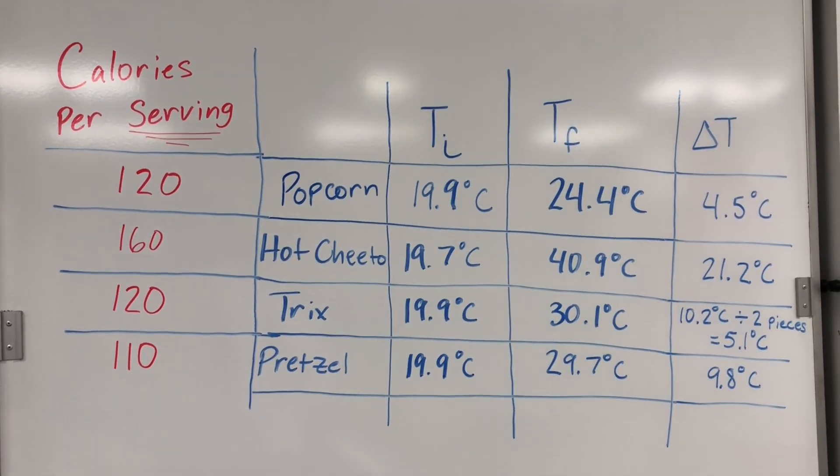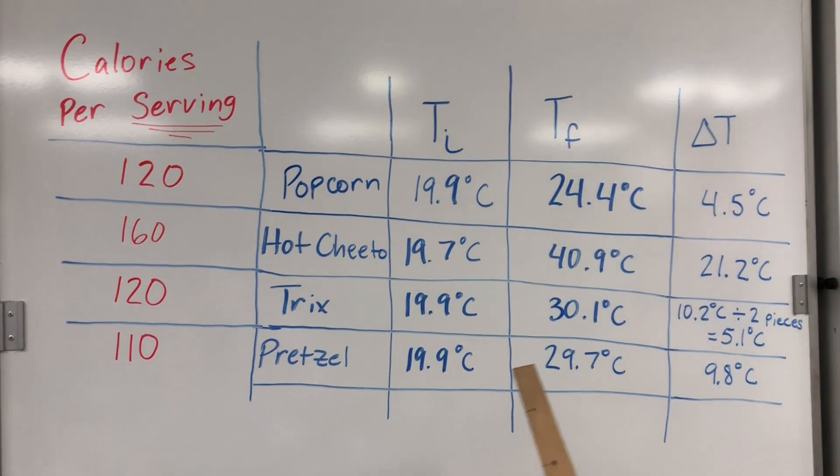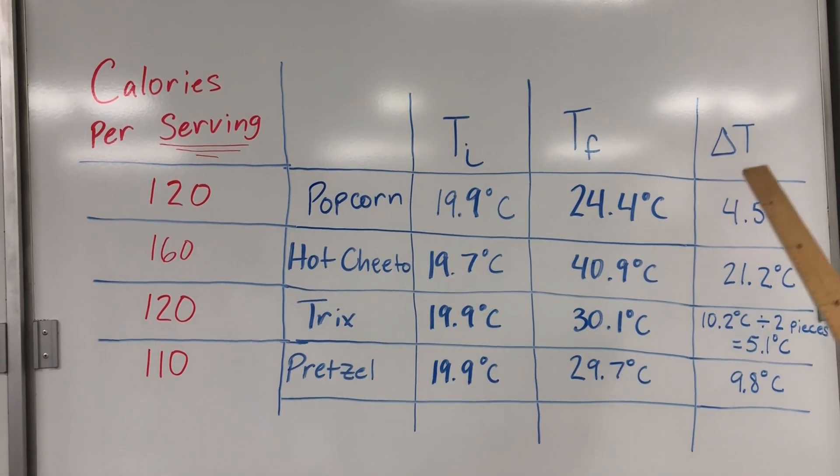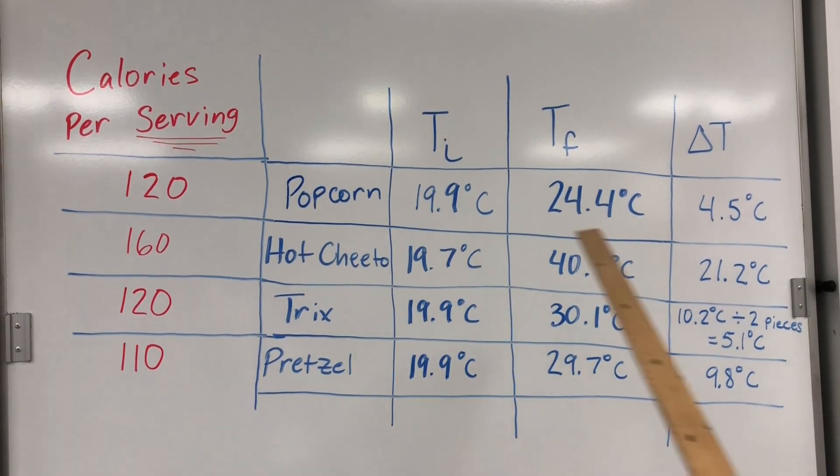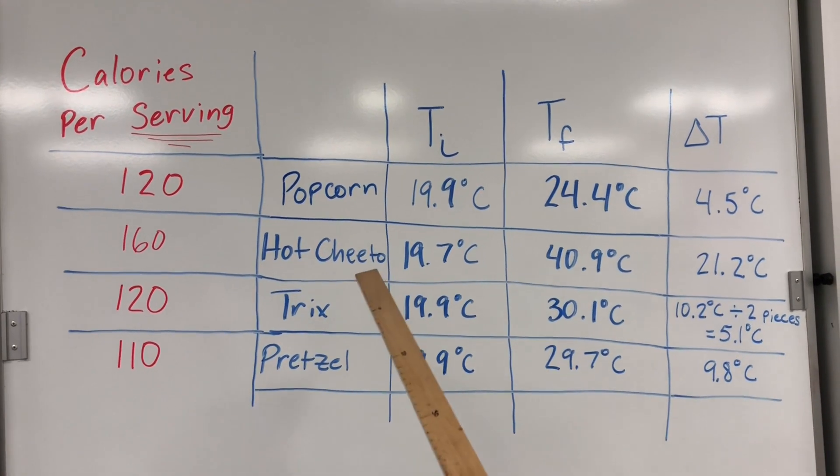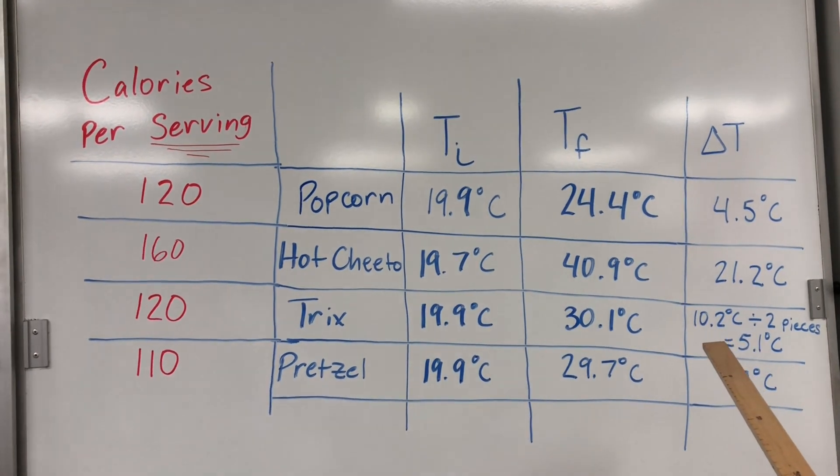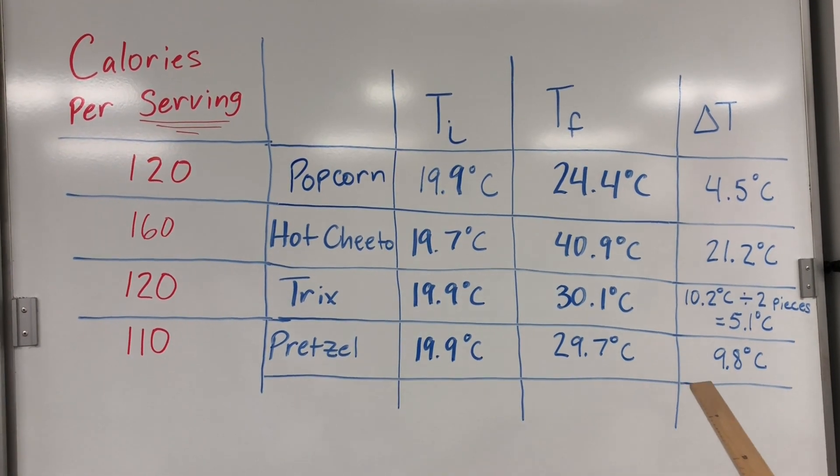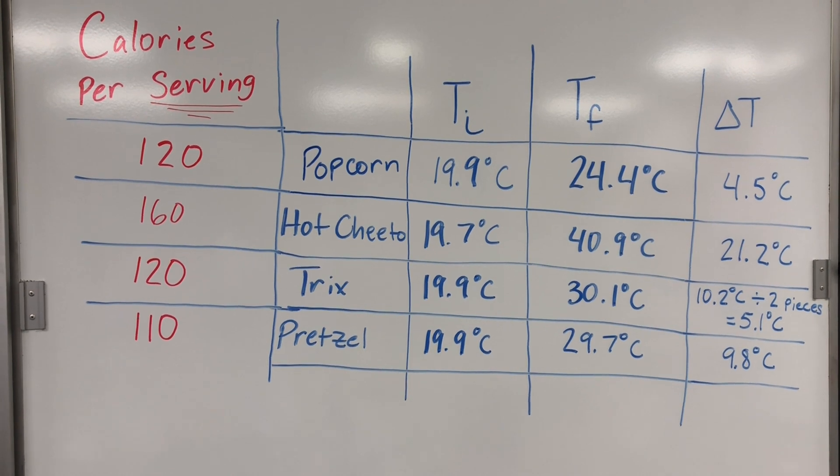Okay, so here's all of our data from those four trials that we ran with the popcorn, the Hot Cheeto, the Trix, and the pretzel. If we did the calculations to find the change in temperature underneath our delta T here based on the change in the water temperature from heating it from the flame: popcorn went up by 4.5 degrees, Hot Cheeto went up by 21.2 degrees—remember we had two pieces of Trix, so I divided the temperature change by two, which was 10.2 divided by 2 is 5.1 degrees Celsius—and the pretzel went up by about 9.8 degrees Celsius.